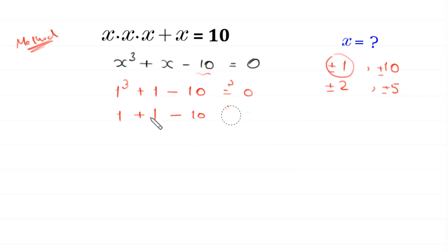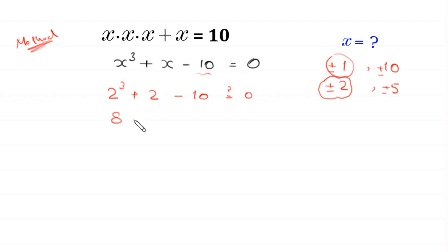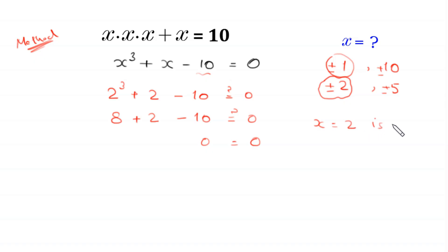Now we try another factor of 10. Let us try positive 2. So in place of this x, we write 2 cubed plus 2 minus 10 is equal to 0. Now, 2 cubed is 8, plus 2 minus 10 is equal to 0. And 8 plus 2 is 10, so 10 minus 10 is equal to 0. This means x equals 2 is a solution.